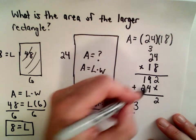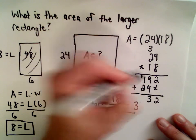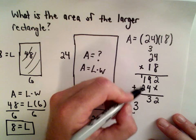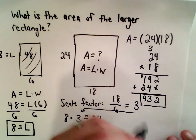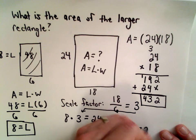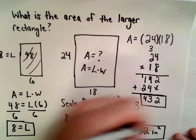2 plus 0 is 2. 9 plus 4 is 13, so we'll drop down the 3 and carry the 1. 1 plus 1 plus 2 is 4. So the area of the larger rectangle is 432 square inches. That'll be our solution.